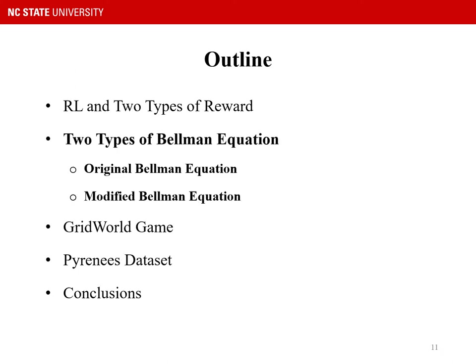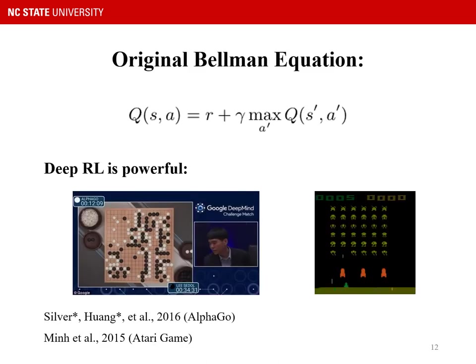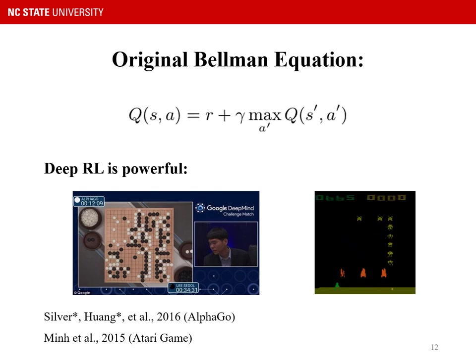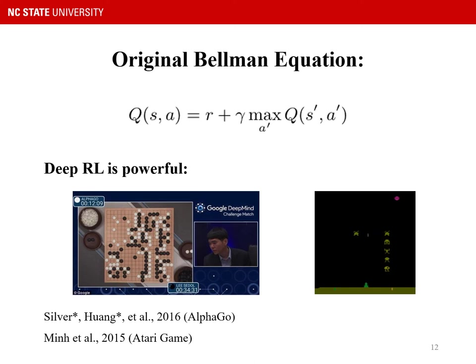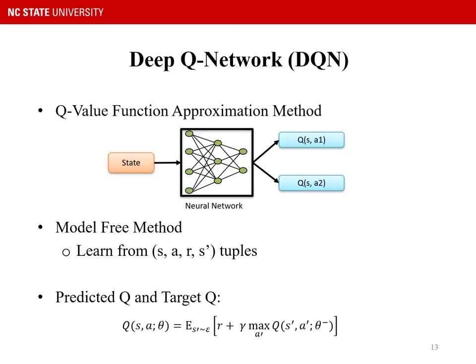Next, I will describe the original and our modified Bellman equation. This is the original Bellman equation — the basic building block of reinforcement learning that all classic algorithms apply to induce the optimal policy. Given the recent success of deep reinforcement learning, in this work we applied deep RL to induce the optimal policy. Deep Q-network (DQN) is the version of Q-learning that uses a neural network to approximate Q values for each state-action pair. It is a model-free method that learns from state, action, reward, and next-state tuples. During training, it aims to minimize the difference between the predicted Q and the target Q.